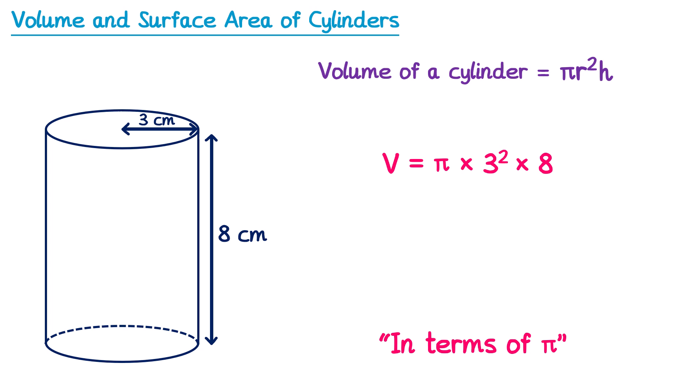If that is the case, we'll start by looking at 3 squared, which means 3 times 3, which is 9. So we actually have π times 9 times 8. We can then multiply the 9 and 8 together, which gives you 72. So we have π multiplied by 72, which is just 72π. So this would be the answer to the volume in terms of pi, and we need to give it some units — the units of volume here would be centimeters cubed.